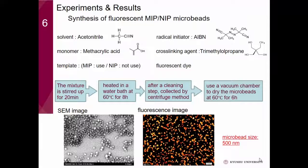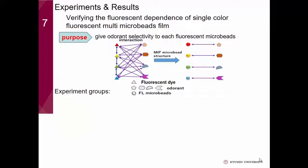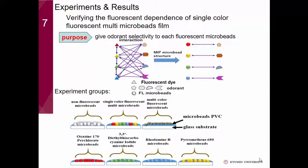From the SEM image, we can see the beads are almost the same size of 500 nanometers. And from the fluorescence image, we can see each bead has its own fluorescence characteristics. Our purpose of this sensor is to give odorant selectivity to each fluorescent microbead. To achieve this purpose, we first have to find out the fluorescence dependence of single-color fluorescent microbead films.